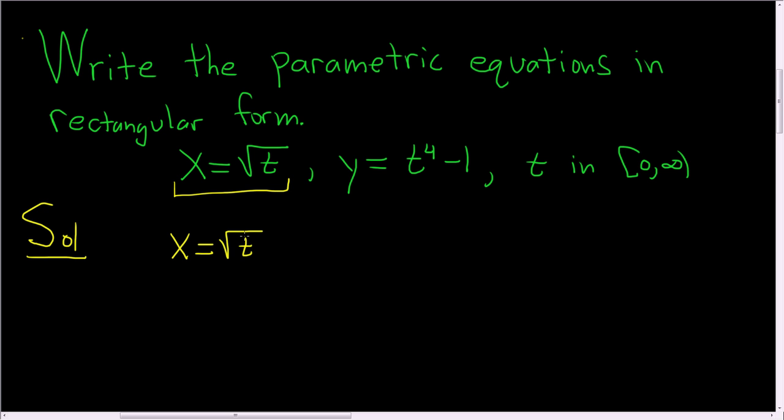To do that, we can square both sides to eliminate the square root. So if we square the right-hand side and the left-hand side, we get x squared equals t. So t is equal to x squared.